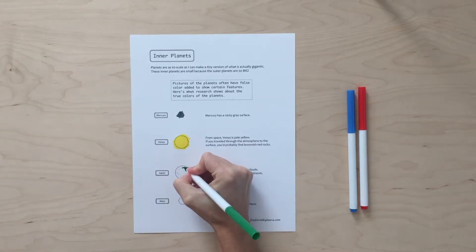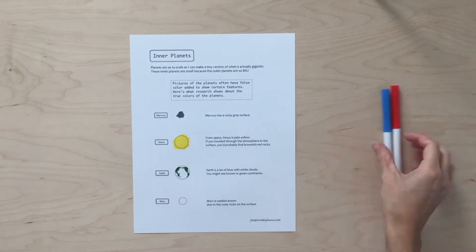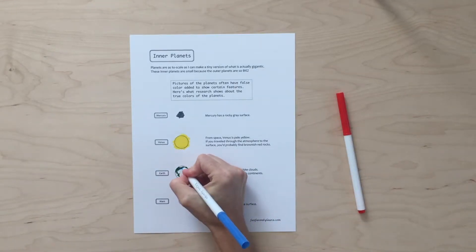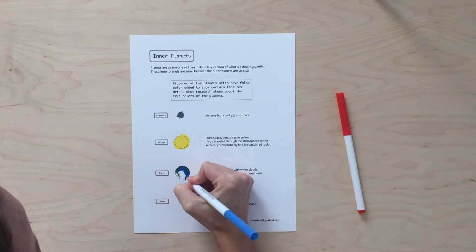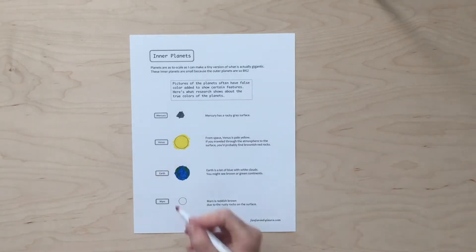Earth is a fun one to look up because it is so beautiful. It has white wispy clouds all over it and just the blue ocean and it's gorgeous. So you could color the continents brown or green because obviously they have some of both, and then blue oceans. Mercury is gray because of its rocky soil. It's the smallest planet. And then Mars, of course, we call the red planet, and that's due to the rusty rocks on its surface.